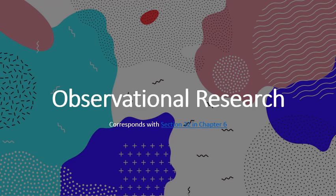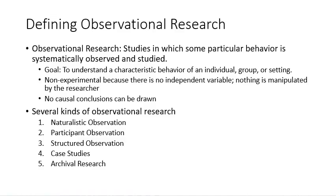Our last method that we're going to look at is observational research, corresponding with section 3.2 in the chapter we're reading. Observational research is a study in which some particular behavior is systematically observed and studied. The goal is to understand a characteristic behavior of an individual, group, or setting. It's non-experimental, there's no independent variable, nothing is manipulated, and no causal conclusions can be drawn.